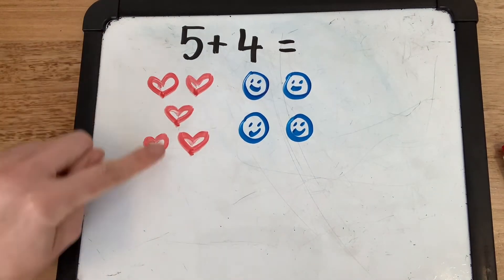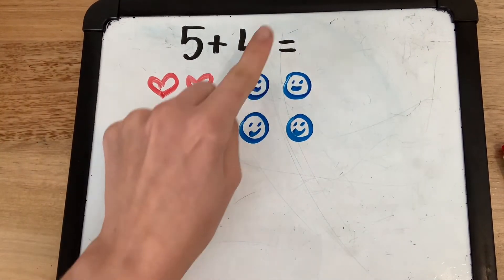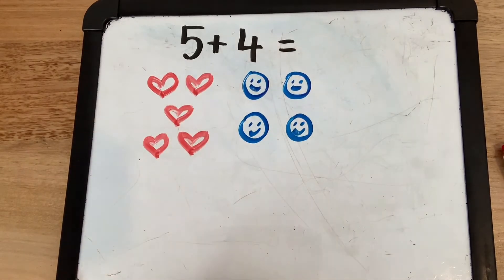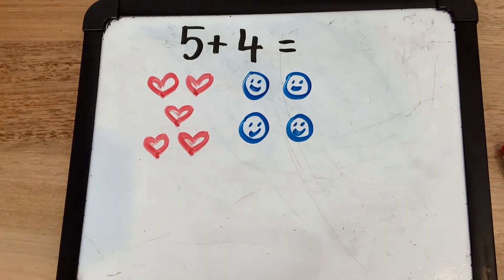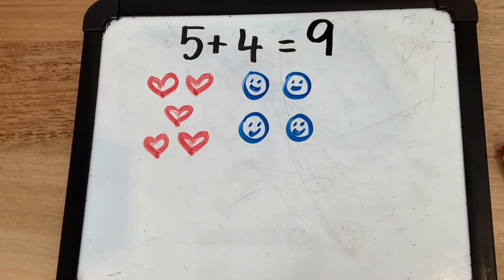Okay, now I know there's five hearts there. So I'm going to try counting on this time. 5, 6, 7, 8, 9. 5 plus 4 makes 9. So I'm going to write my answer here. So did you see that time I used counting on to solve the problem?